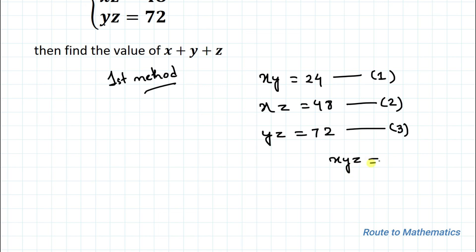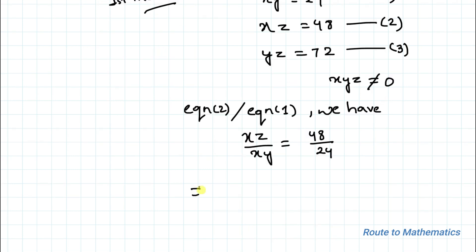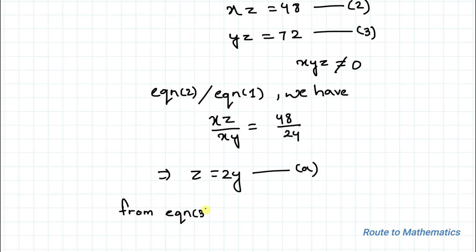Since x, y, and z must not equal zero, let's divide equation 2 by equation 1. So xz divided by xy equals 48 divided by 24, which implies z equals 2y. Let's take this as equation A. Now let's substitute the value of z into equation 3.